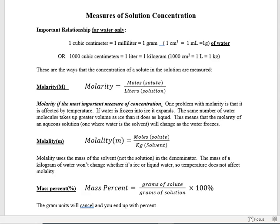Now let's talk about different measures of concentration. The first is molarity — moles of solute divided by liters of the entire solution, not just the water. If you wanted to compute the concentration of salt water, you'd take the grams of salt, convert to moles using a molar mass conversion, and then divide by the liters of salt water solution.